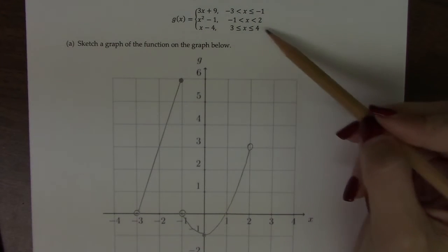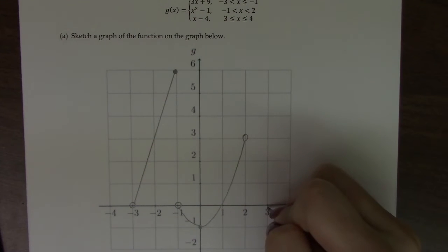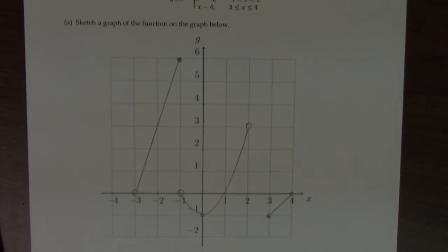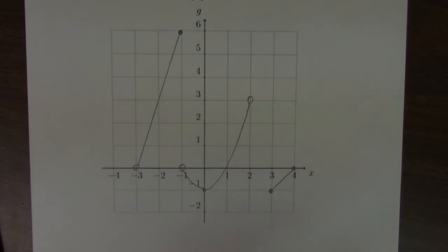The last is a line. It only exists from 3 to 4. So at 3, 3 minus 4 is negative 1, and it does exist there. At 4, we get 0. And so this is the graph of my piecewise function. It's a piece of a line, a piece of a quadratic, and a piece of a line.